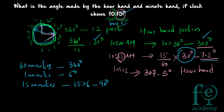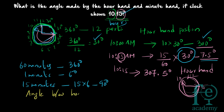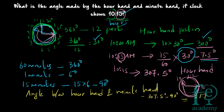With respect to 12 as the common reference, the hour hand is at 307.5 degrees and the minute hand is at 90 degrees. To find the angle between them, we subtract: 307.5 − 90 = 217.5 degrees. So the angle between the hour hand and minute hand at 10:15 is 217.5 degrees.